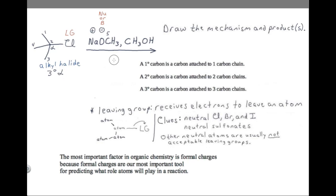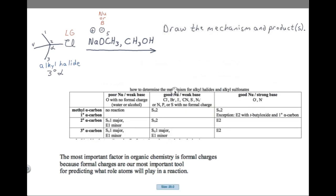Now we choose a mechanism. For an alkyl halide, we use a table to determine the mechanism. We have a tertiary alpha carbon, so we use the bottom row of the table — the row for a tertiary alpha carbon. Our nucleophile or base is O-, so we use the right-hand column of the table, which is the column for O-. The table therefore predicts an E2 mechanism. Write down the name of the mechanism.